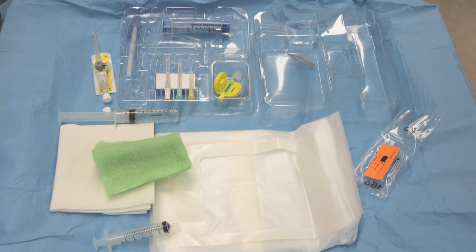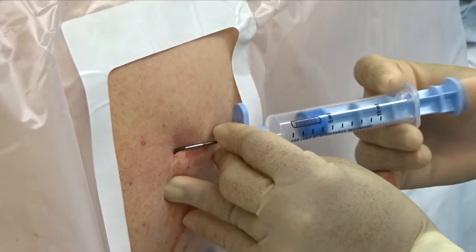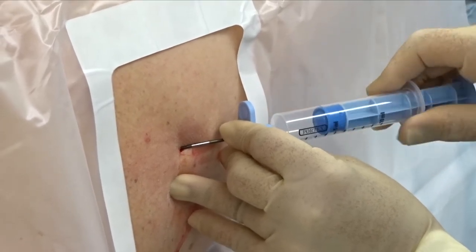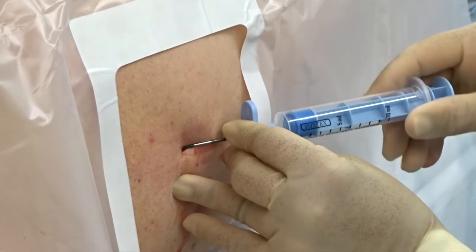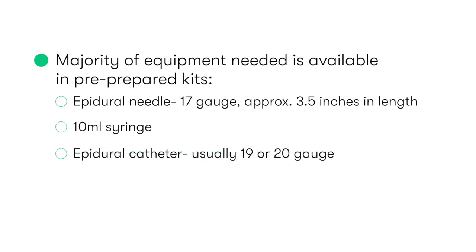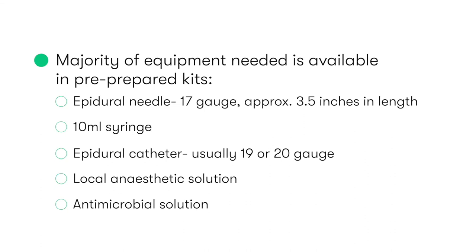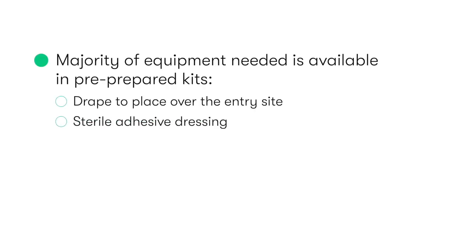The majority of equipment needed to perform epidural catheter insertion is available in pre-prepared kits. These include an epidural needle, typically 17 gauge and approximately 3.5 inches in length; a 10ml syringe which during the procedure will be filled with air, attached to the needle, and used to check for loss of resistance, indicating that the needle tip has penetrated the ligamentum flavum and is correctly sitting within the epidural space. We also need an epidural catheter, usually 19 or 20 gauge; local anesthetic solution; antimicrobial solution for cleaning the area; a drape to place over the entry site; a sterile adhesive dressing; and sterile gloves, a gown, a mask, and a cap.